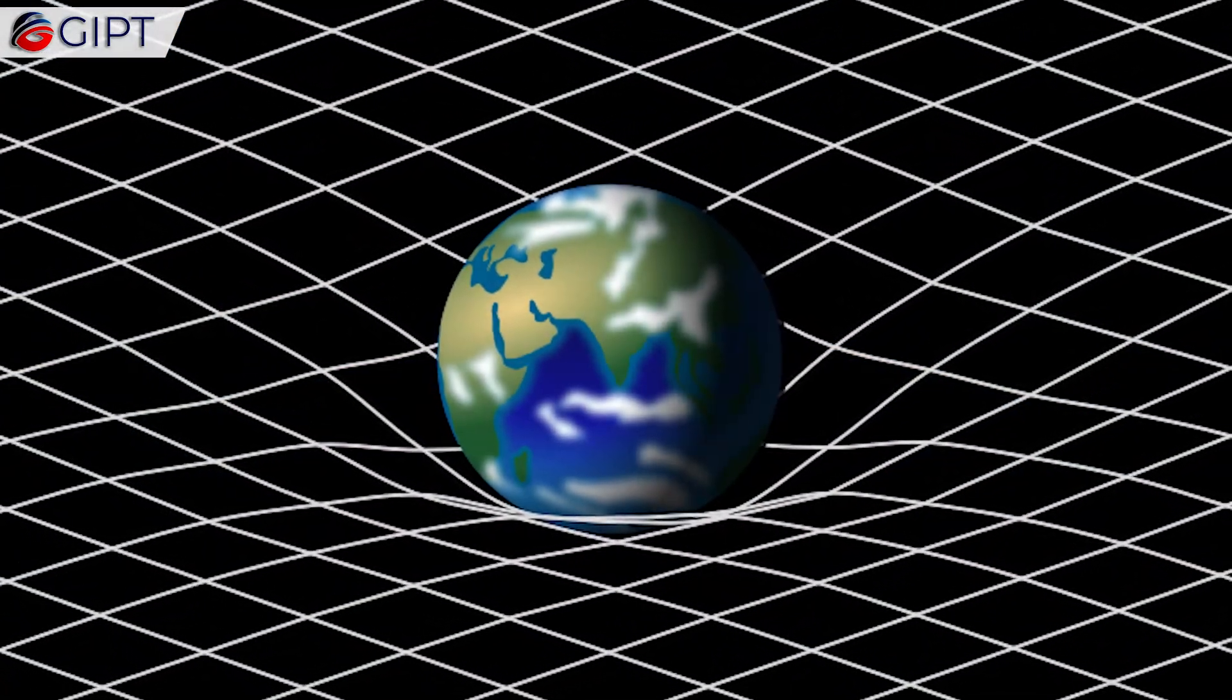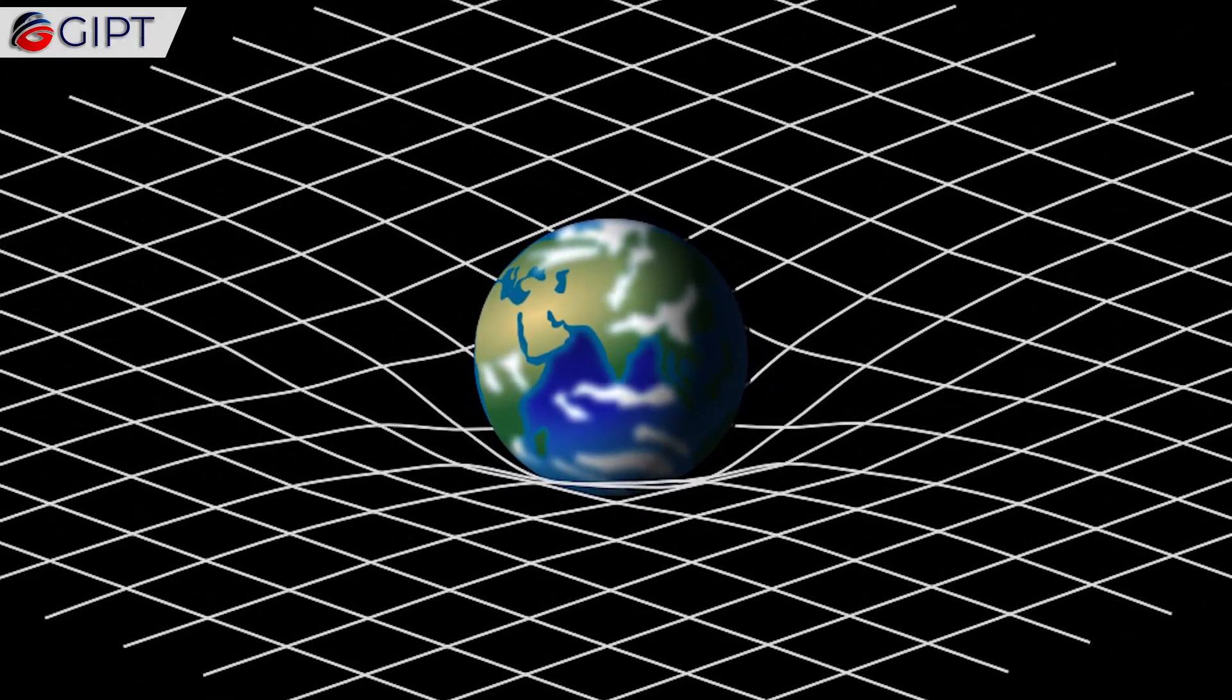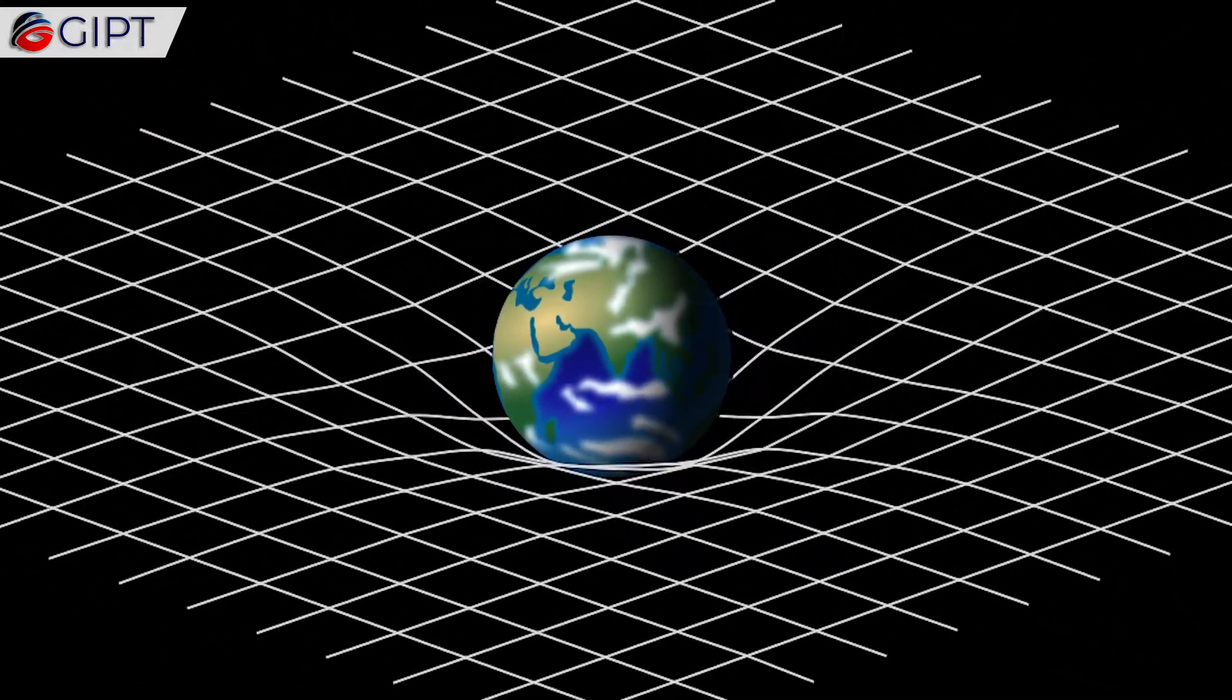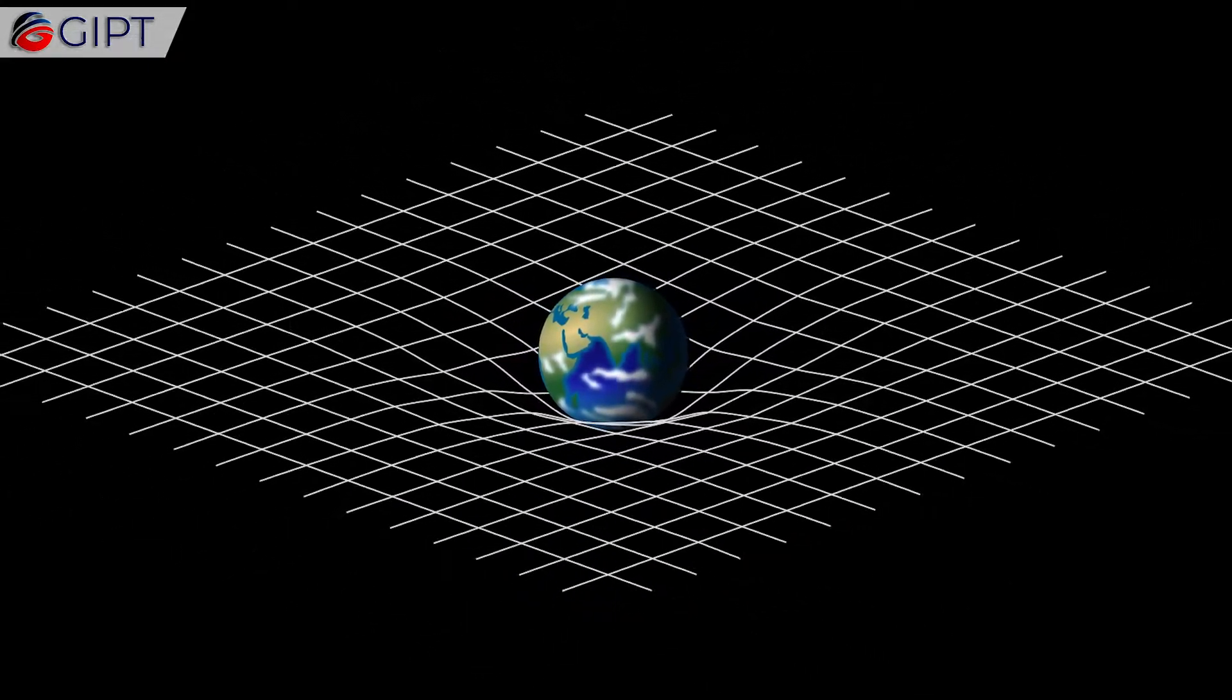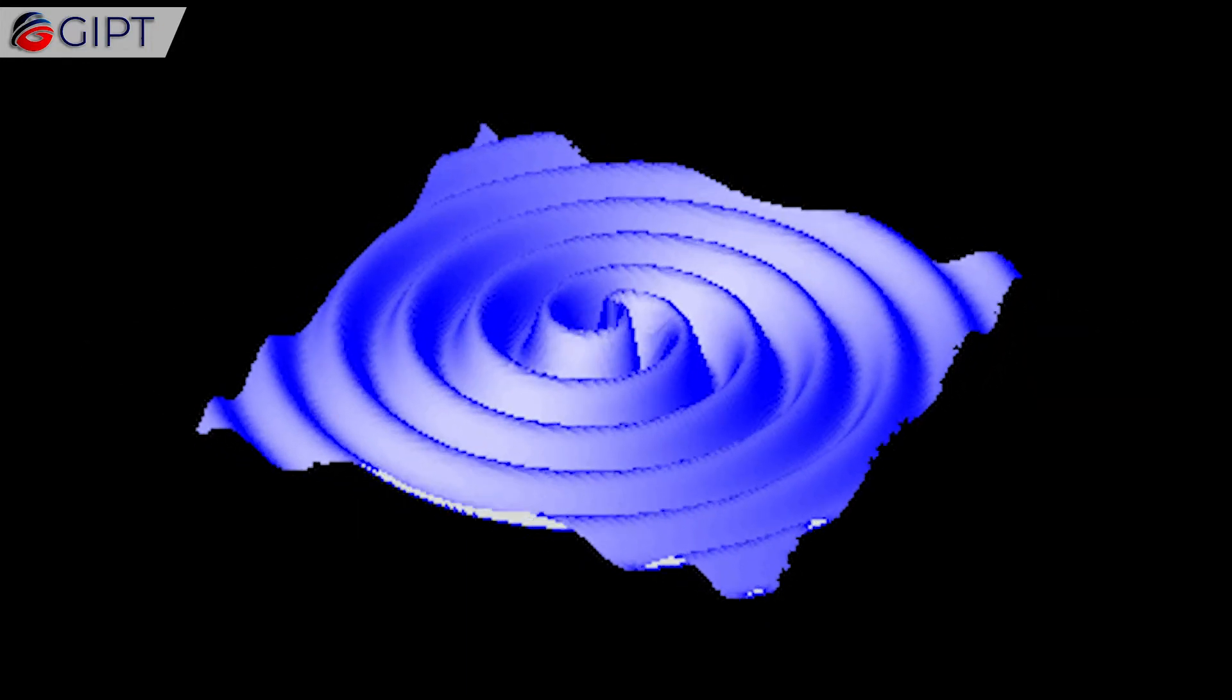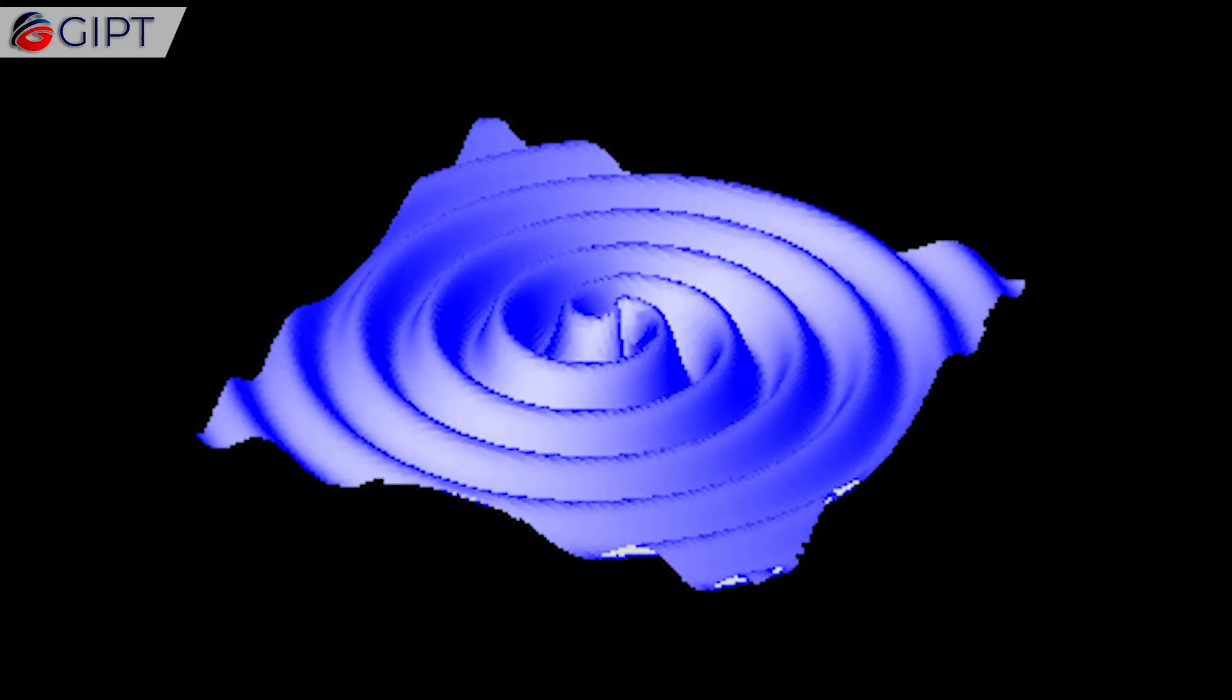So Einstein rejected gravitational waves even though his own theory predicted they exist. He almost published a paper containing that huge error. Luckily another scientist spotted his mistake before the paper went to press. Einstein was able to fix the gravitational waves formula and published the corrected version, suggesting that they do exist.